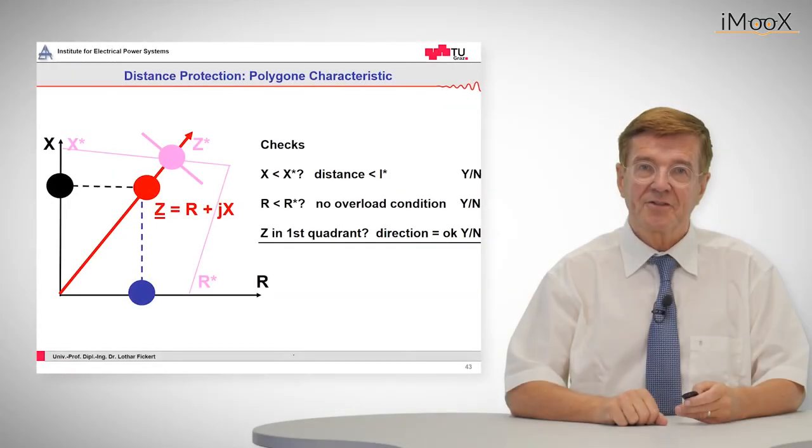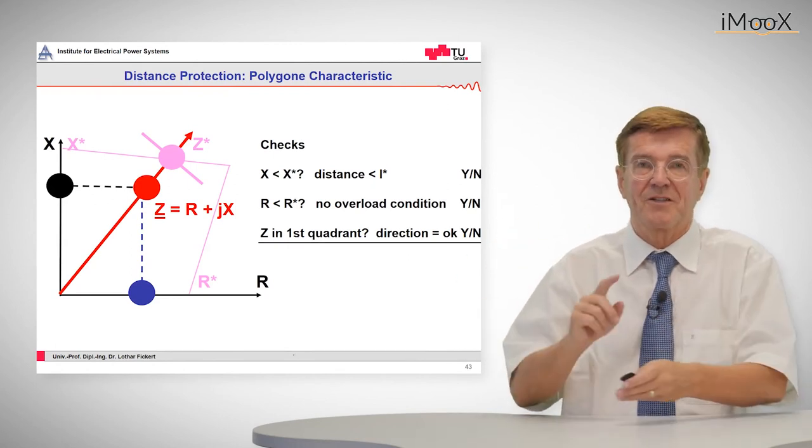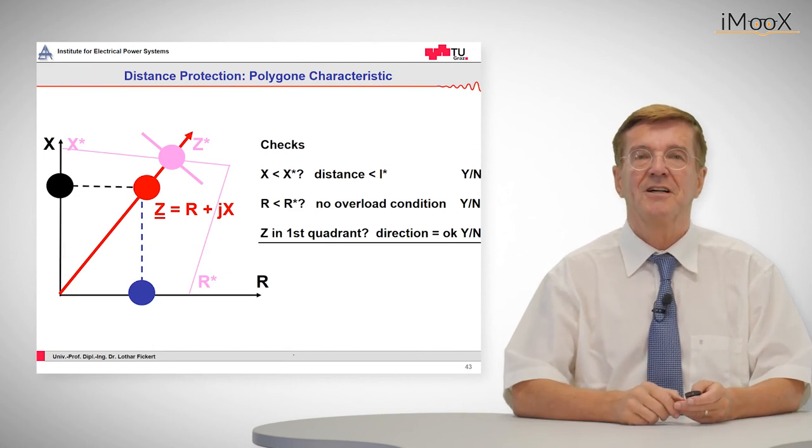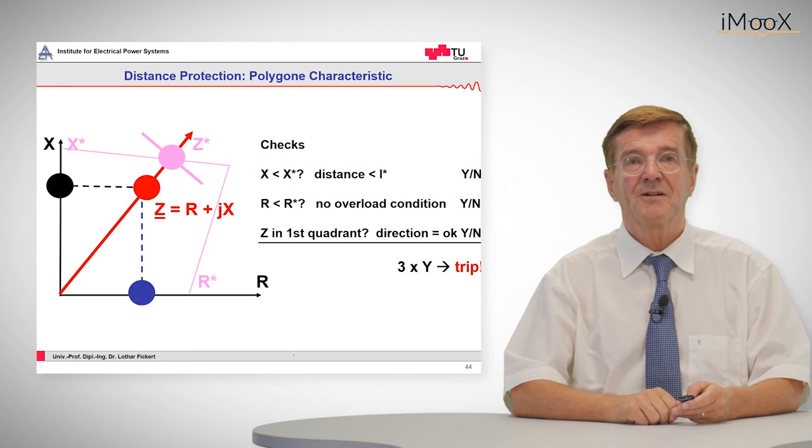And the third condition is, is the whole impedance lying in the first quadrant. That means that it is forward, that is downstream, and not in the reverse direction which would mean restraining. Now if these three conditions are fulfilled we have a trip.